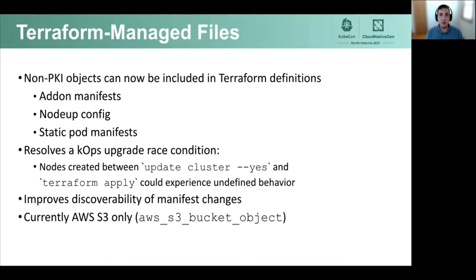There is a new feature in kops 1.22 for Terraform users. Kops will now define many state store objects as Terraform resources, including add-on manifests, static pod manifests, and nodeup config. This primarily resolves a race condition during upgrades where kops update-cluster was updating objects too soon. They will now be updated during a Terraform apply, which is closer to when launch templates are updated — which reference these objects. A nice side effect is improved discoverability of changes, since you can preview content changes with a Terraform plan, which was previously not possible. Currently this is only supported by S3, but support for GCS and other cloud providers is planned.